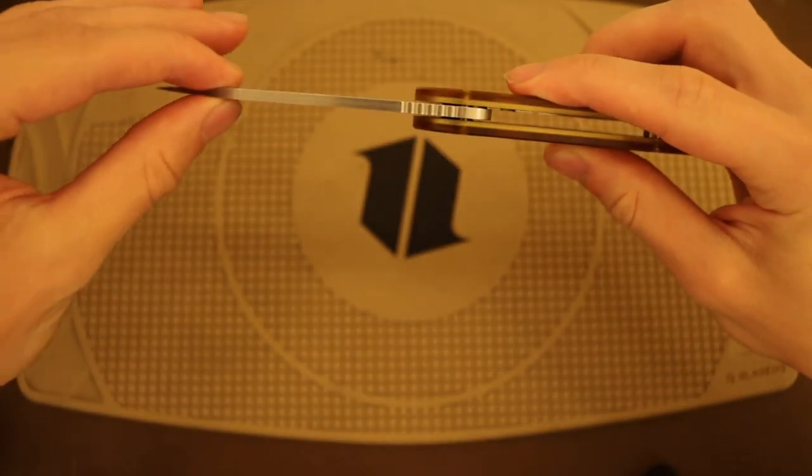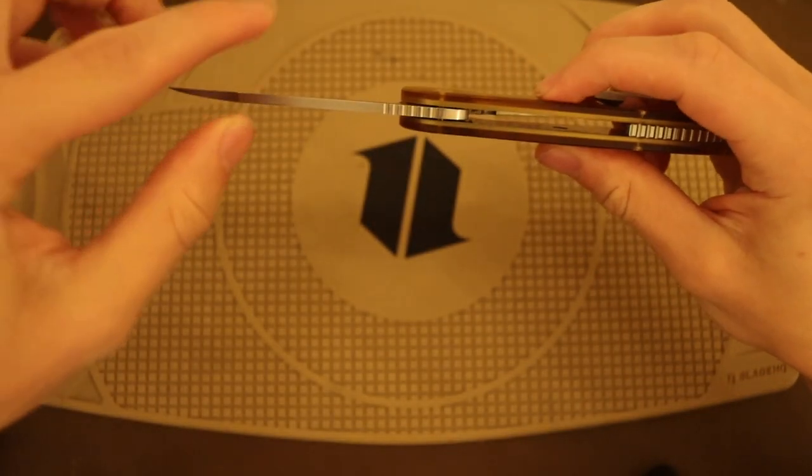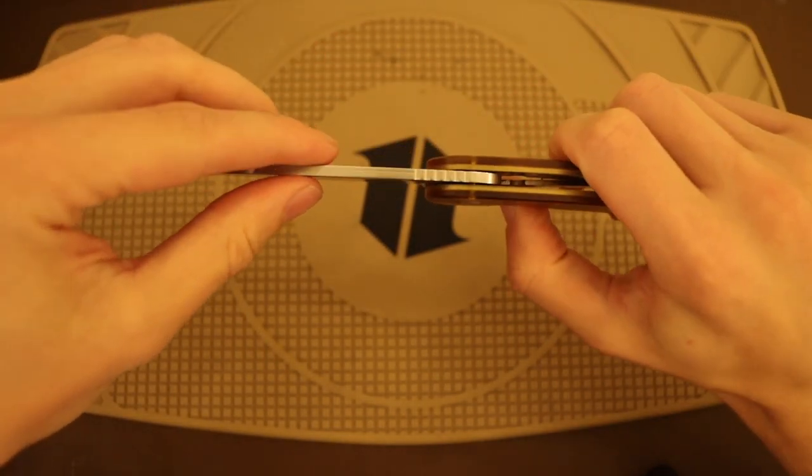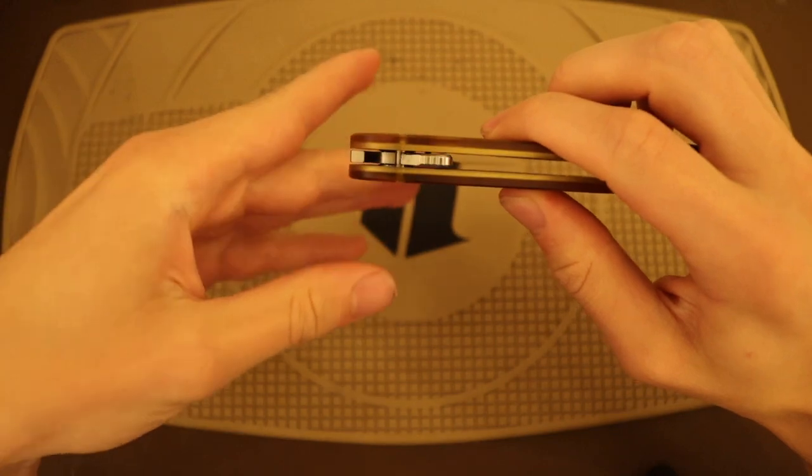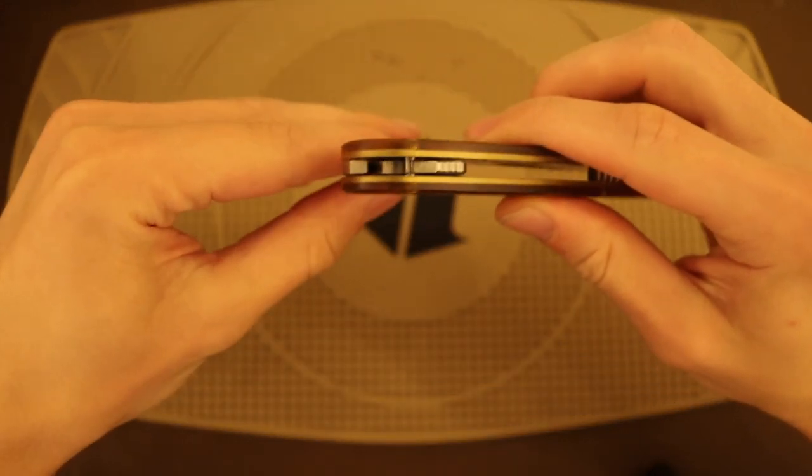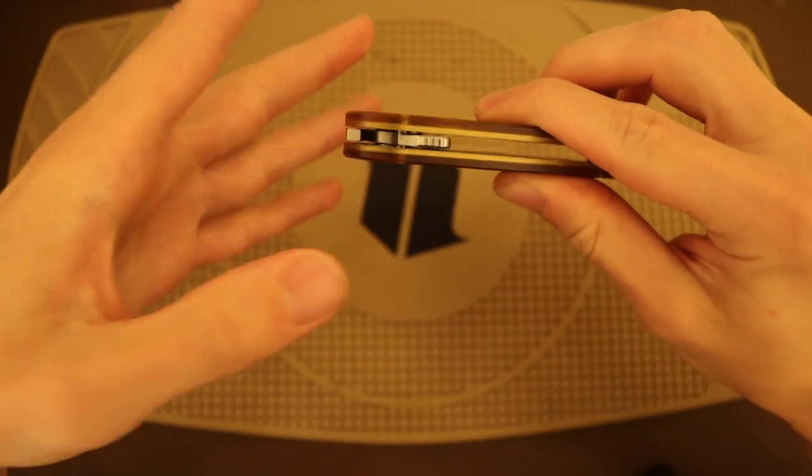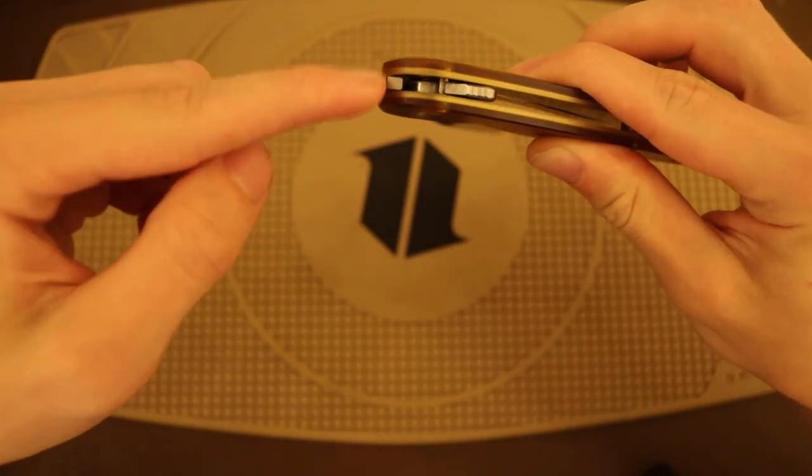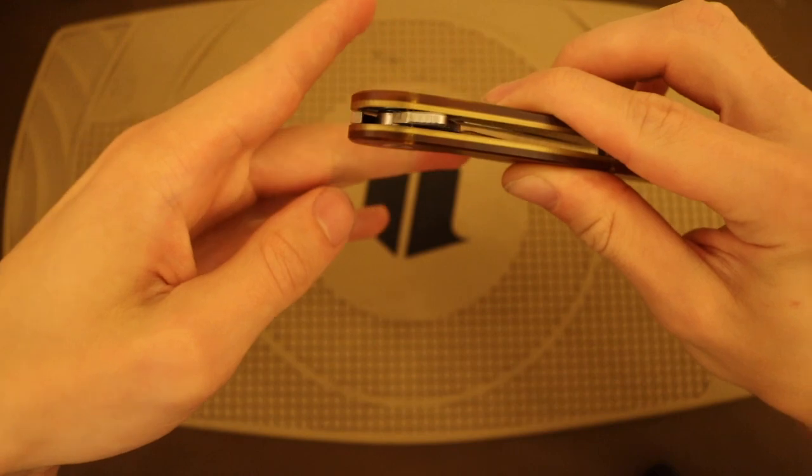...or rather the tang of the blade is milled so that that stop pin rests internally inside the tang of the blade. Now, like I also mentioned in other videos, I don't necessarily think that necessarily makes the knife stronger, but I do think that it is a really cool feature, and moreover I think it's cool how they made it work with the flipper.